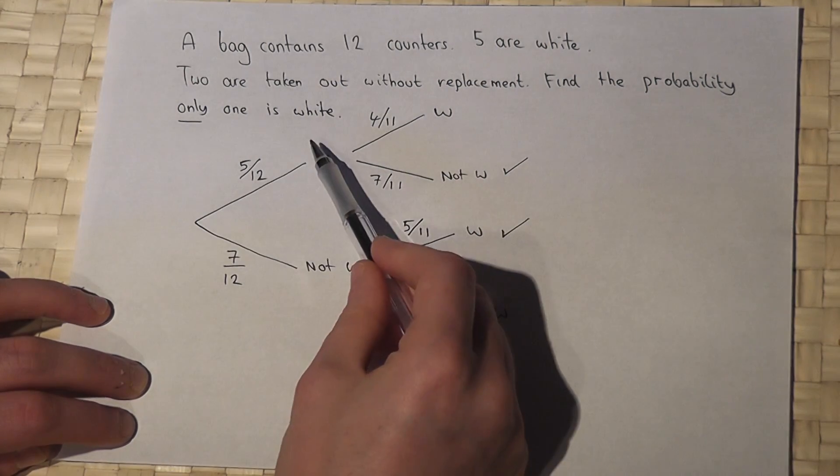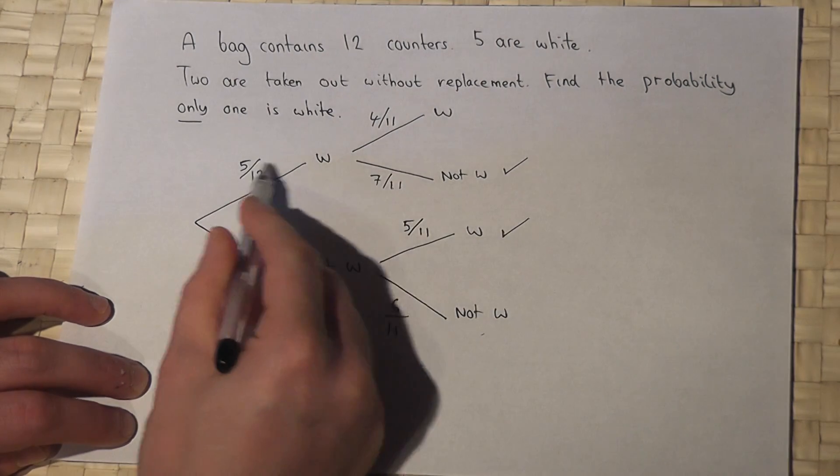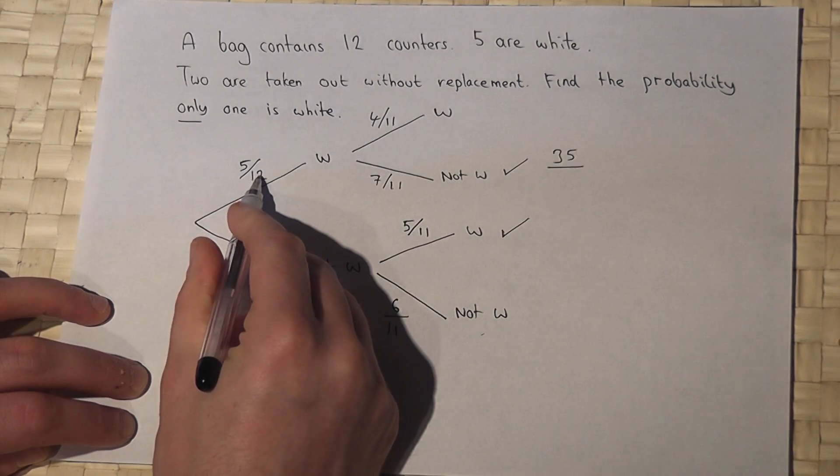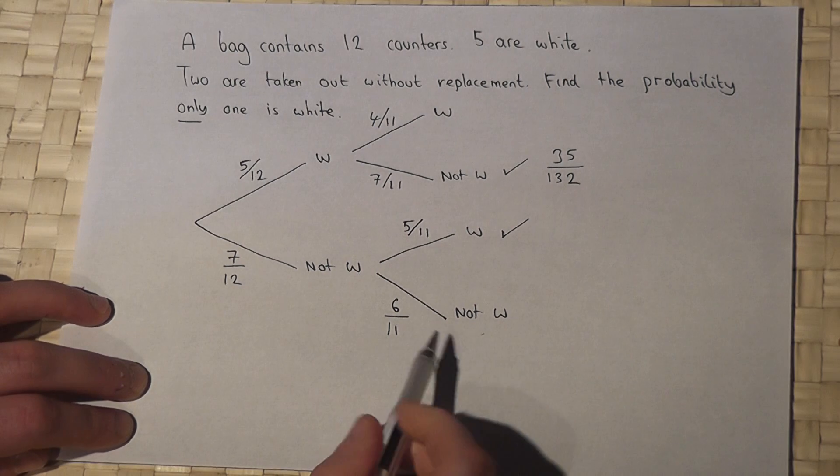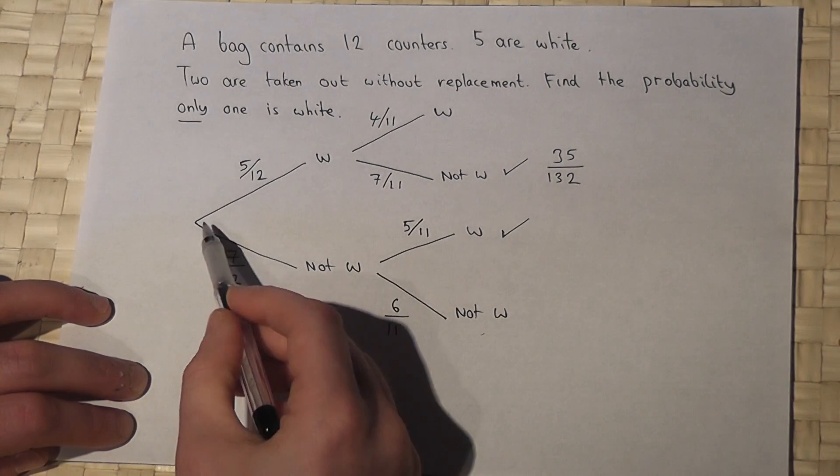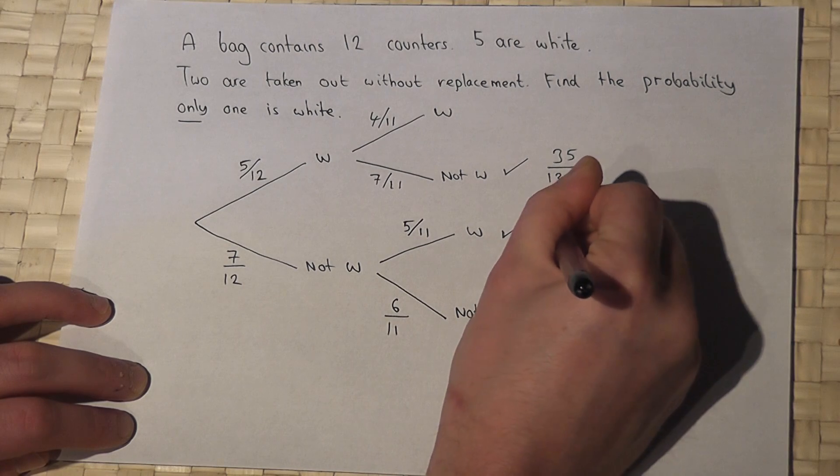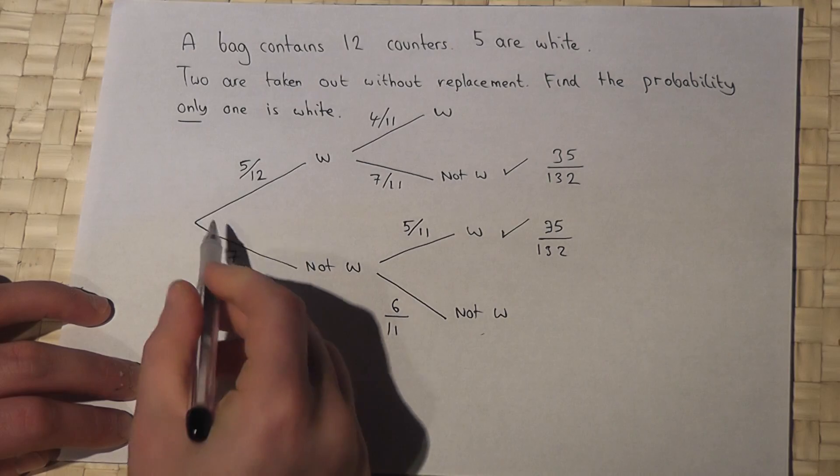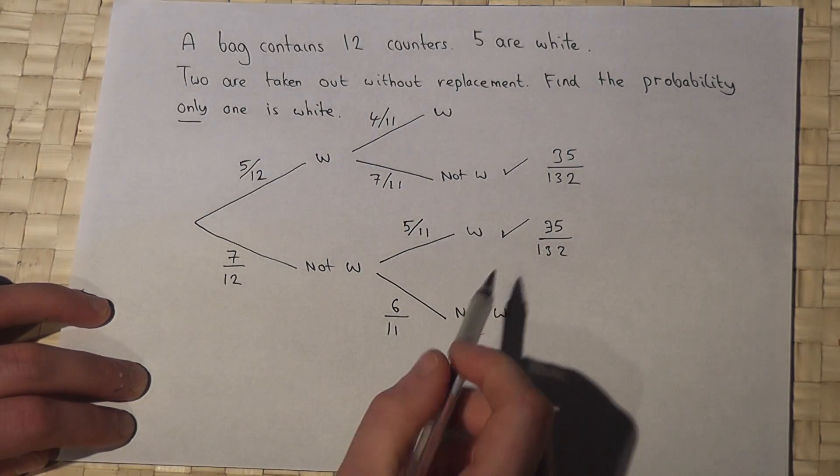We can find the chance of these separately by doing 5/12 times 7/11, so 5 times 7 is 35, 12 times 11 is 132. This option is also 7 times 5, which is 35 over 12 times 11, which is 132. So we multiply the fractions down the required routes.